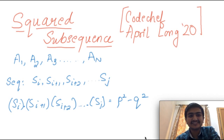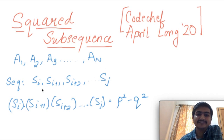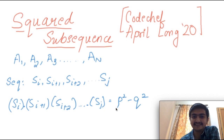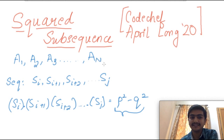In this question we were given an array a such that a1, a2, and so on. We were given that there is a special kind of continuous sequence such that the product of this sequence is equal to the difference of two squares p² minus q². We have to find the total number of continuous subsequences of array a such that this condition holds.